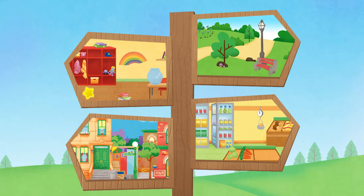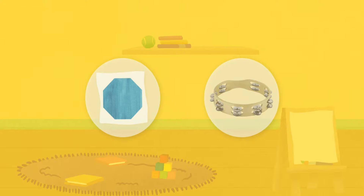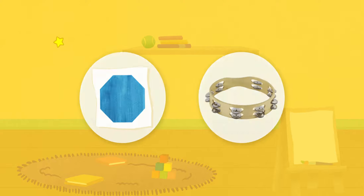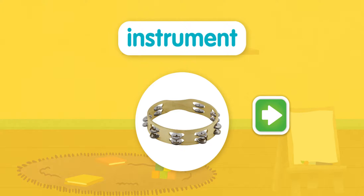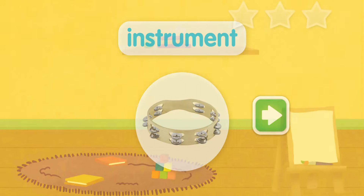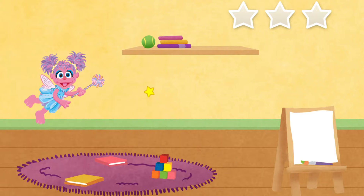Our classroom. First, let's figure out which word we're looking for. Choose the picture that shows an object you can use to make music. That's right. The word is instrument. An instrument is an object you can use to make music. Let's find more instruments. Help me fly up and down to collect instruments.